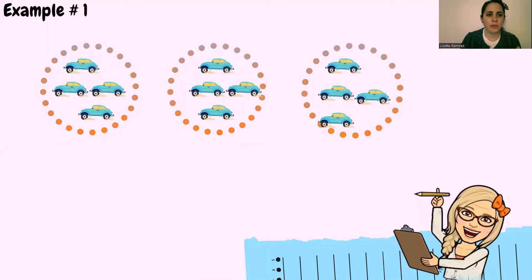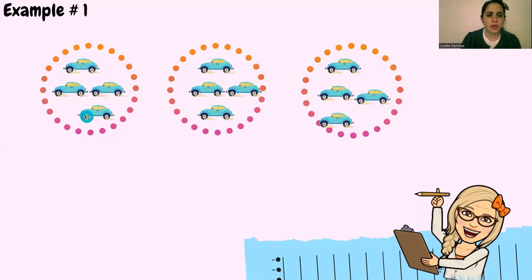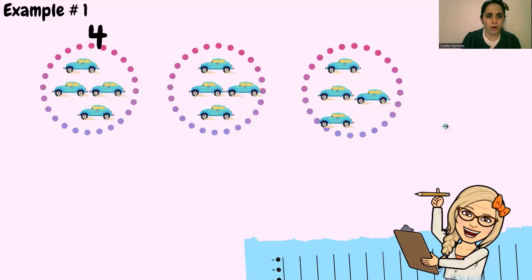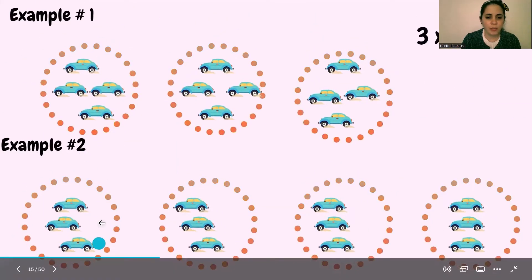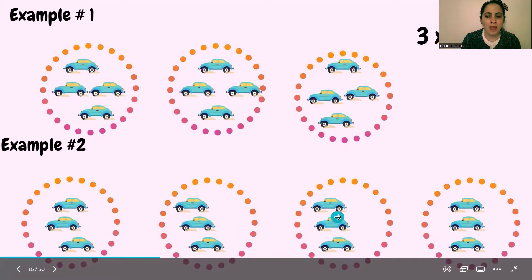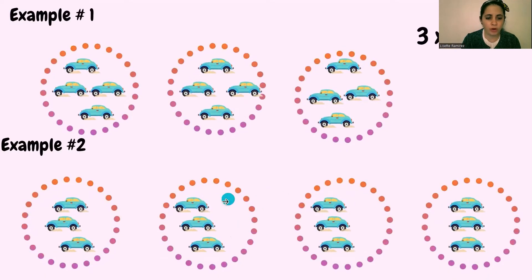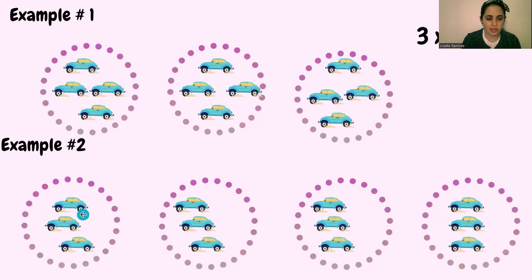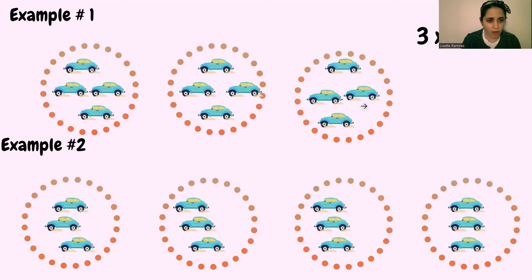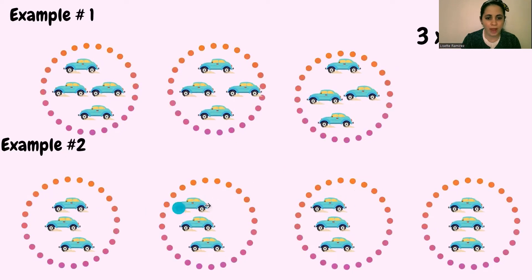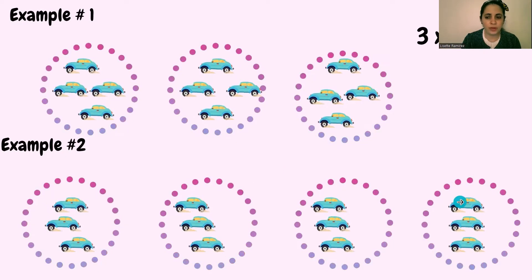Let's look at example number one. We have three groups with four toy cars in each one. Now let's take a look at example number two. In example number two, we have four groups with three in each. So in example number one we have three groups with four toy cars, and in example number two we have four groups with three toy cars.